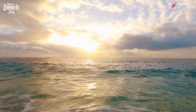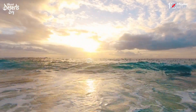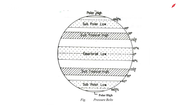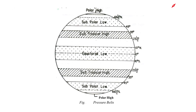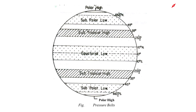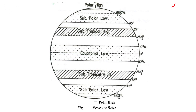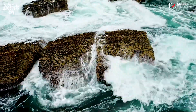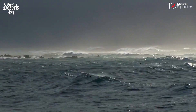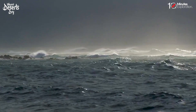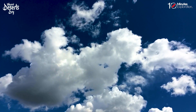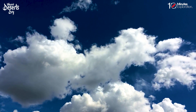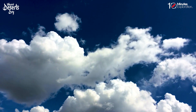Another important factor contributing to desert dryness is the presence of subtropical high-pressure zones. These zones are located at approximately 30 degrees latitude in both the northern and southern hemispheres. Within these areas, the atmospheric pressure is relatively high, and as a result, the air descends from higher altitudes. This descending motion creates stable atmospheric conditions that suppress the formation of clouds and hinder rainfall.